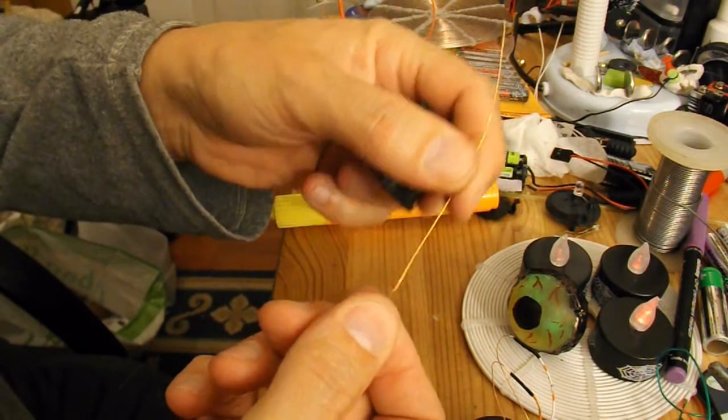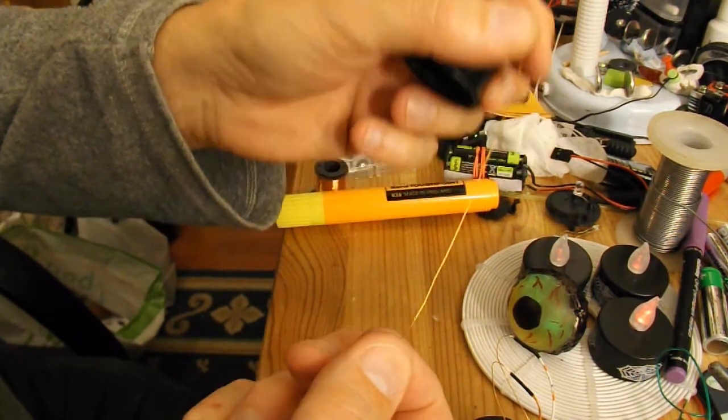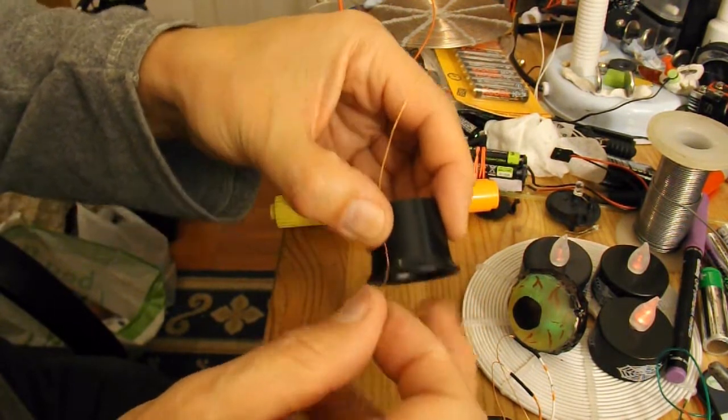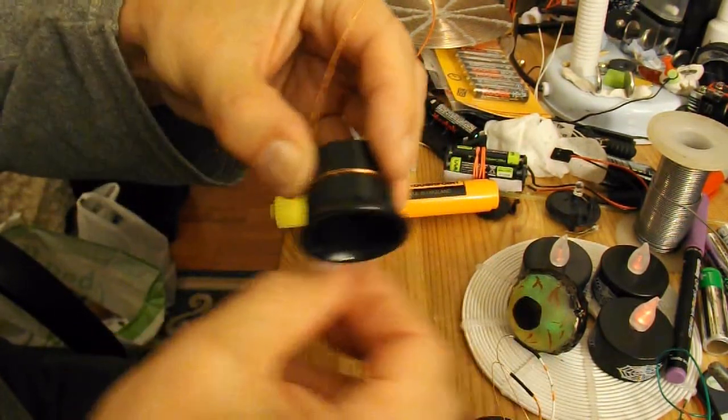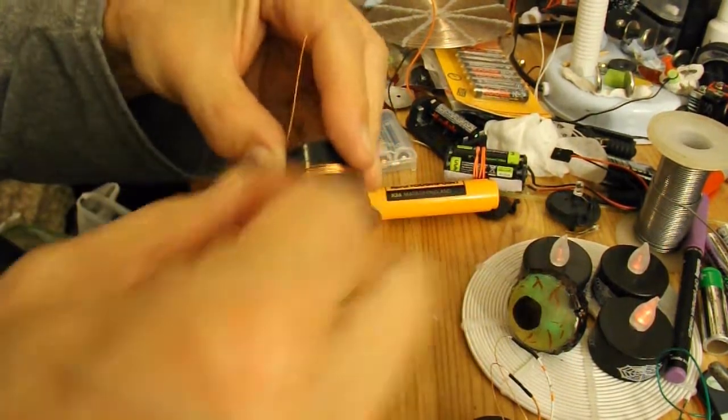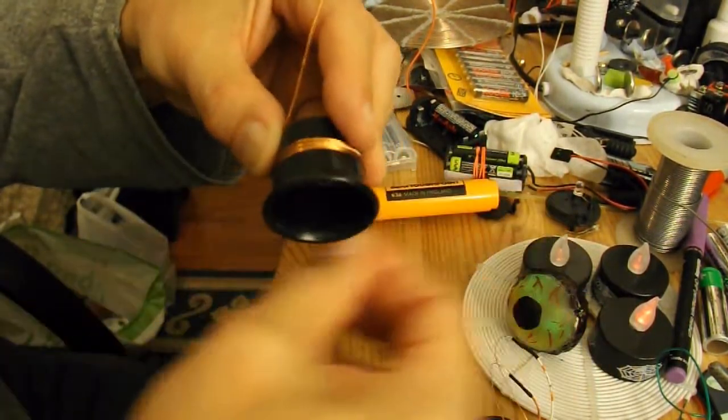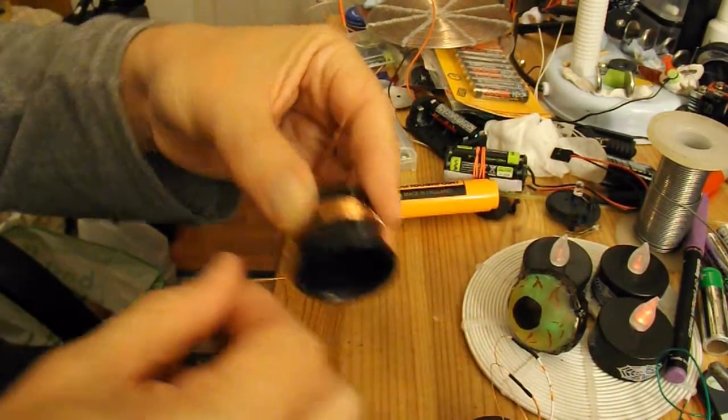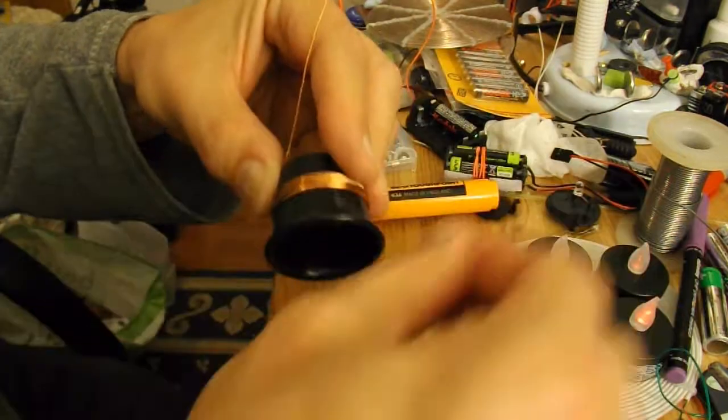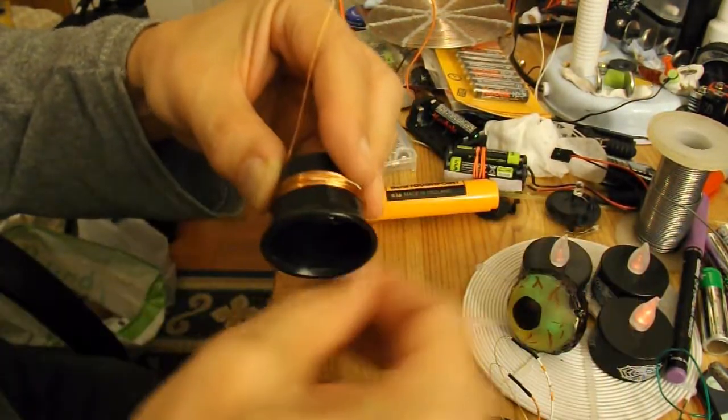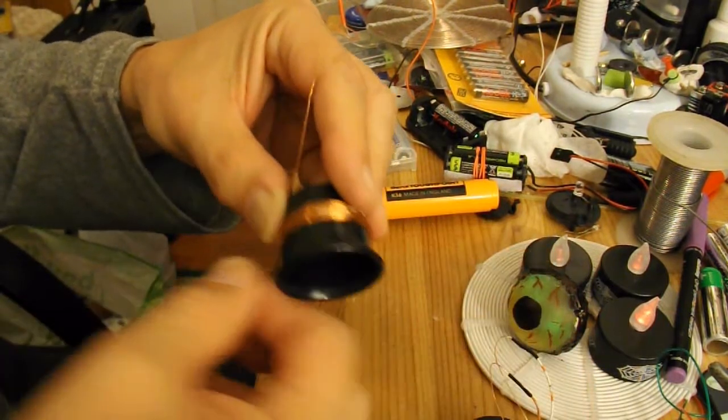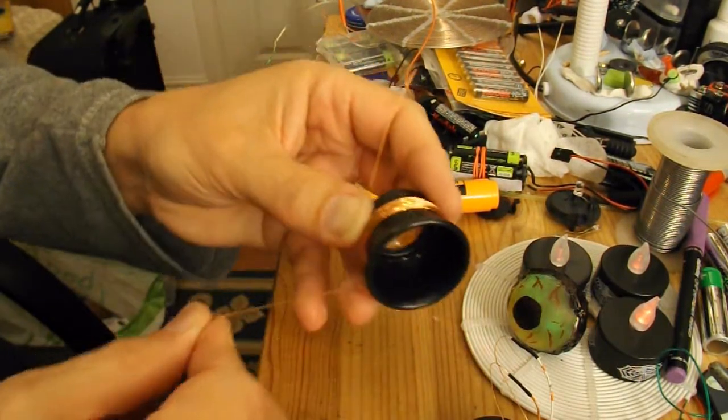So I've got this wire that I've taken out of an old transformer. Hold it onto my eyepiece. That's 1, 2, 3, 4, 5, 6, 7, 8, 9, 10, 11, 12, 13, 14, 15, 16, 17, 18, 19, 20, 21, 22, 23, 24, 25, 26, 27, 28, 29, 30. That should be plenty.